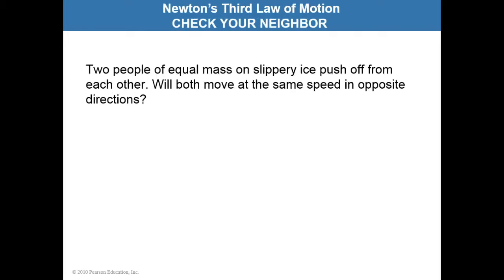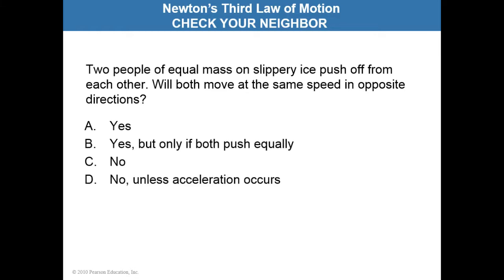All right. Two people of equal mass on slippery ice push off from each other. Say Brother Matt pushes off on Brother Matt on some slippery ice. Will both move at the same speed in opposite directions? A. Yes, B. Yes but only if both push equally, C. No, or D. No unless acceleration occurs. Pause the video now to determine your answer.